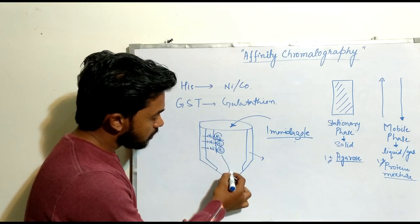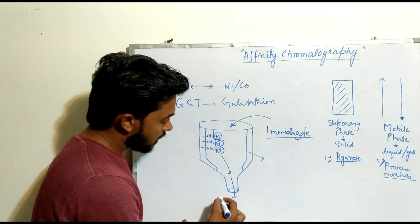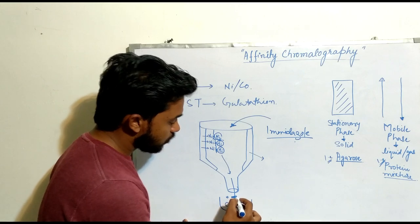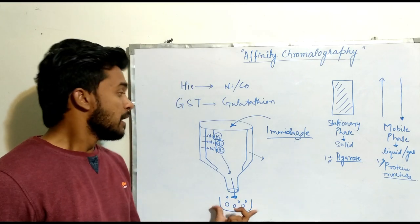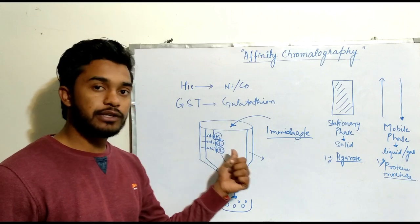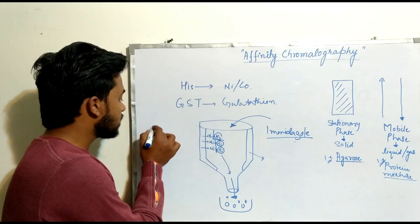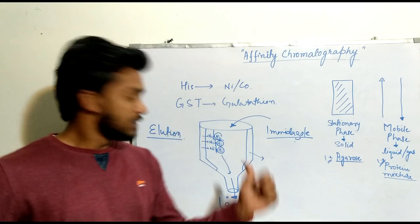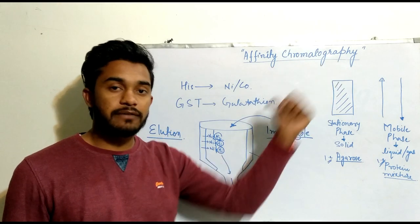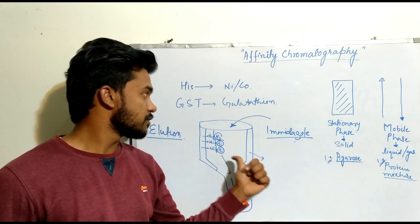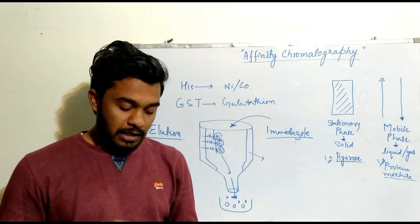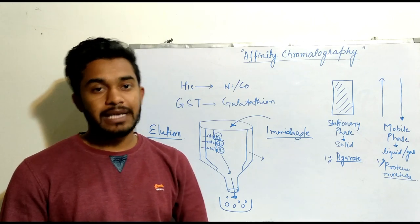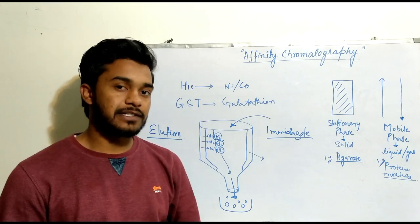The histidine molecules are then washed out and collected into a beaker. This process of separating histidine molecules from nickel or cobalt is known as elution. This is the working principle of Affinity Chromatography. Next, we will talk about other types of chromatography such as ion exchange chromatography, gas chromatography, and column chromatography.